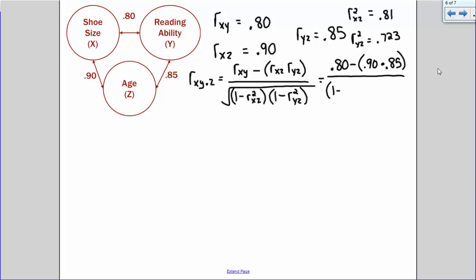So I have 1 minus 0.81 here and 1 minus 0.723 here. 1 minus rxz squared, that squared, which is 0.81, and 1 minus ryz, this guy squared, or 0.723. And don't forget your square root.